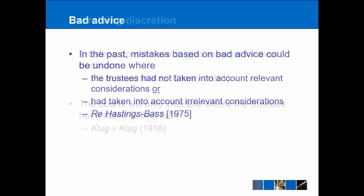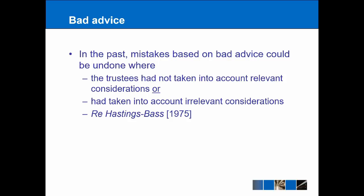What about cases of bad advice? Under previous case law, mistakes based on bad advice — for example where you want to find out which trust gives the best tax advantage and an accountant gives you bad advice that the trustee then acts upon — meant the trustee had essentially taken into account irrelevant considerations, so that mistake could be undone by the courts. That comes from Re Hastings-Bass 1975.